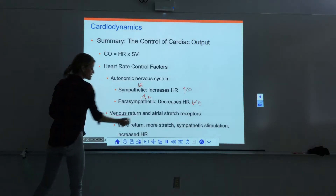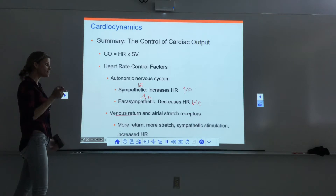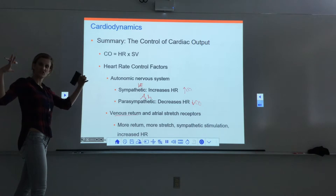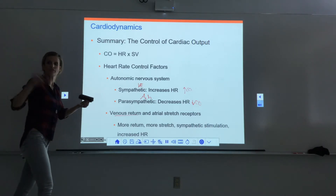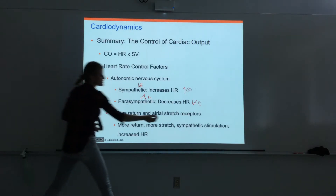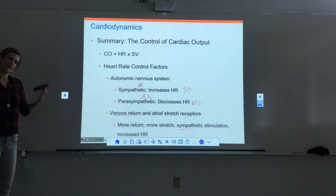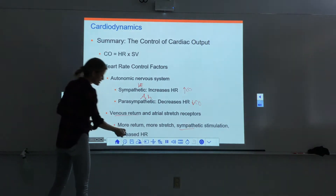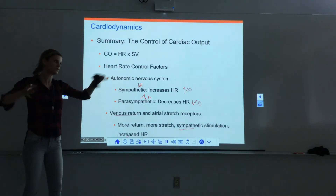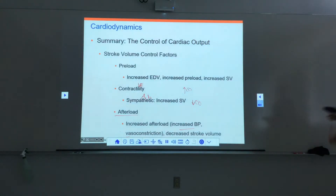Venous return — how much blood is coming back to the heart — also affects heart rate, because there are stretch receptors in the atria. The more blood crammed in, the more the atria stretch, and the more the heart knows it needs to push things forward. Stimulating those stretch receptors sends a signal to the cardioacceleratory center, which stimulates sympathetic neurons to release norepinephrine, increasing heart rate to even out the backlog of blood.